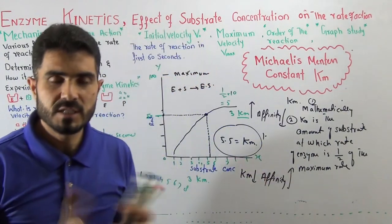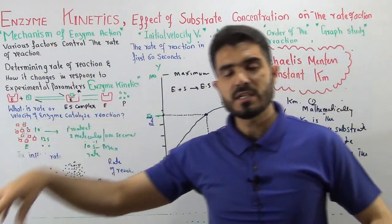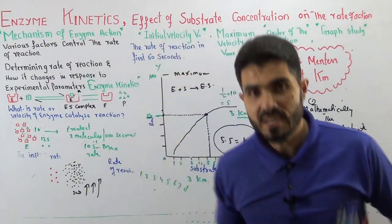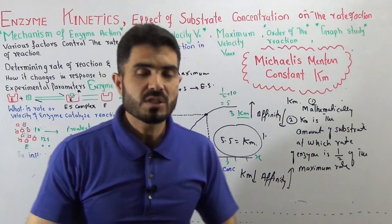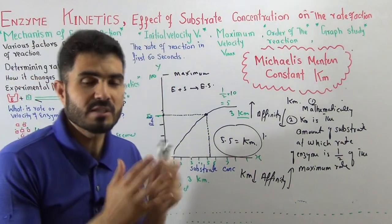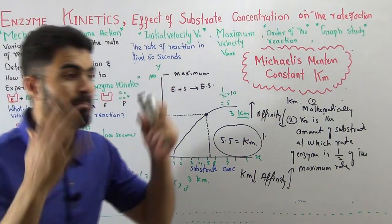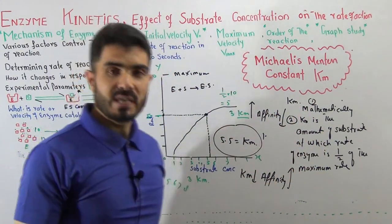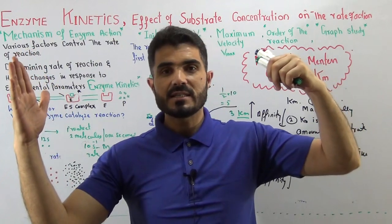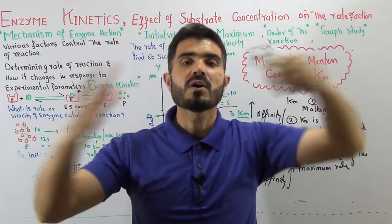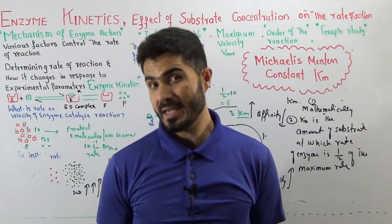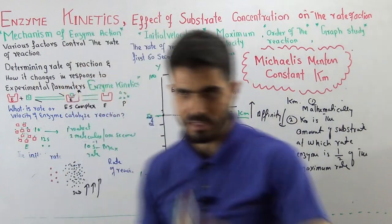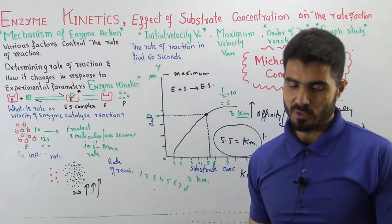I already told you that there are three importances of Km. Km tells us at which substrate concentration the speed is half of the maximum. Km tells us at which substrate concentration we get the maximum speed. Third, Km tells us whether the substrate is having high affinity with the enzyme or less affinity within the enzyme. So Km Michaelis constant gave these three information to us. I hope you got this lecture. See you in the next video lecture. Thank you.